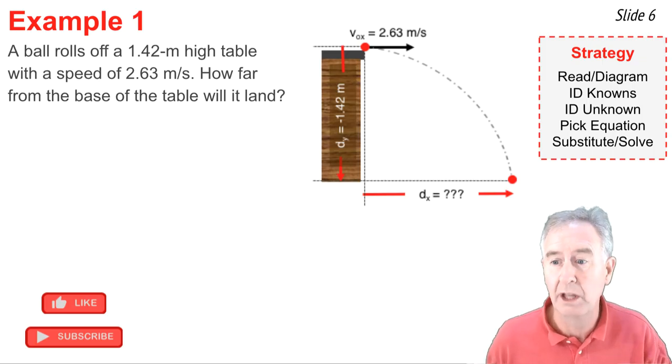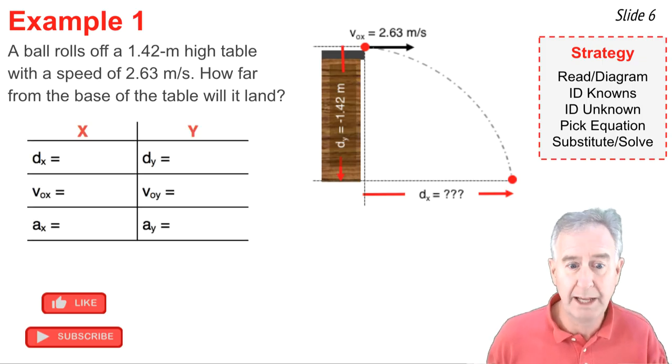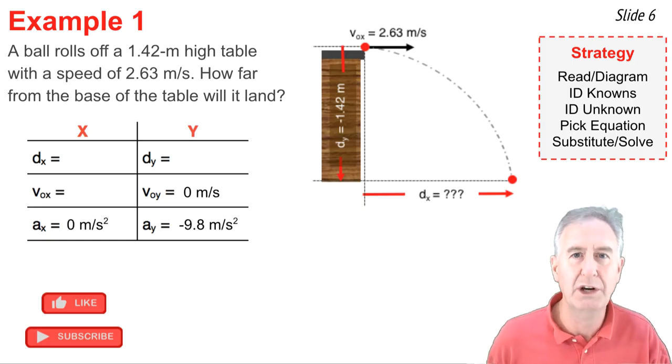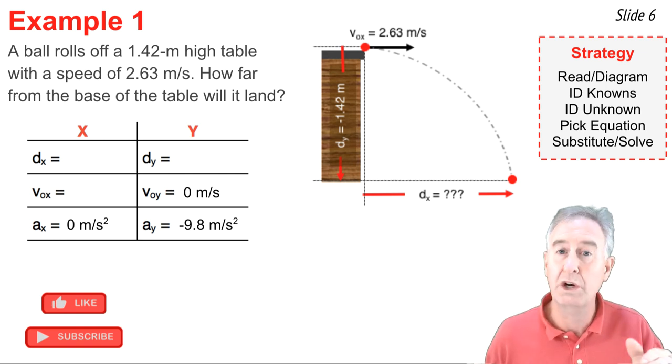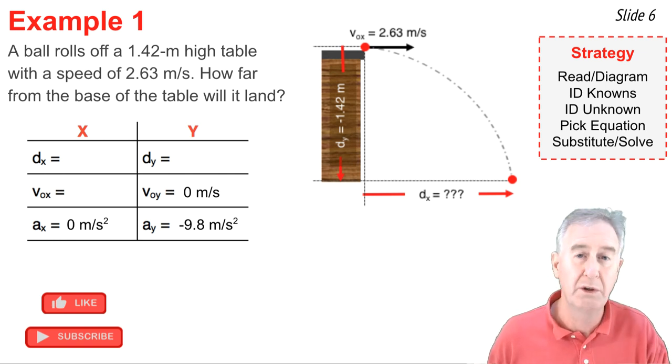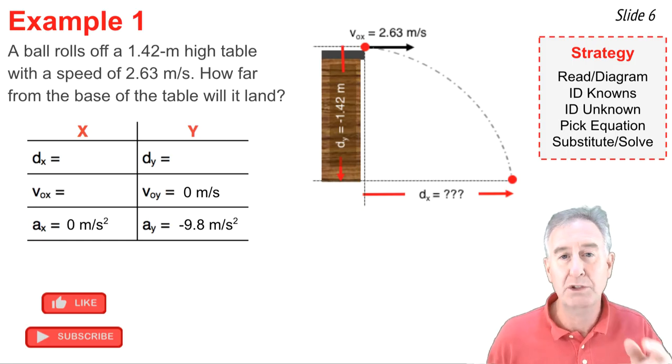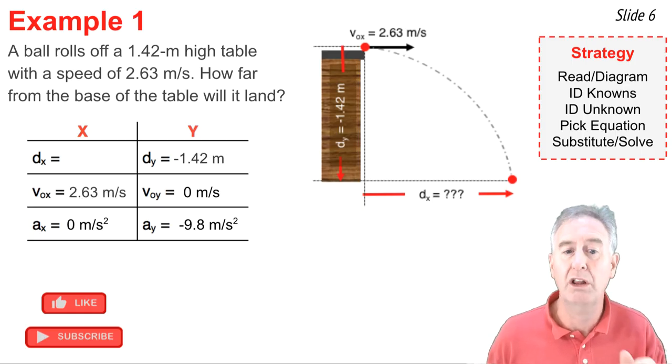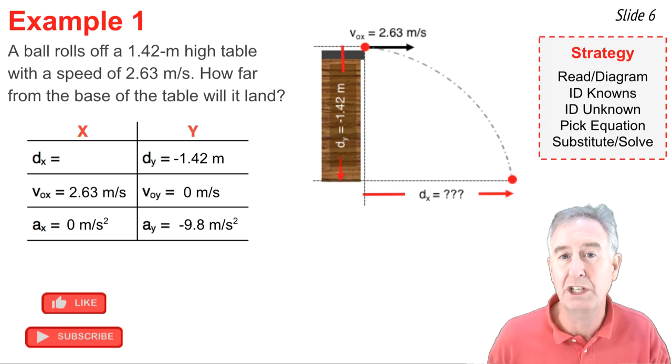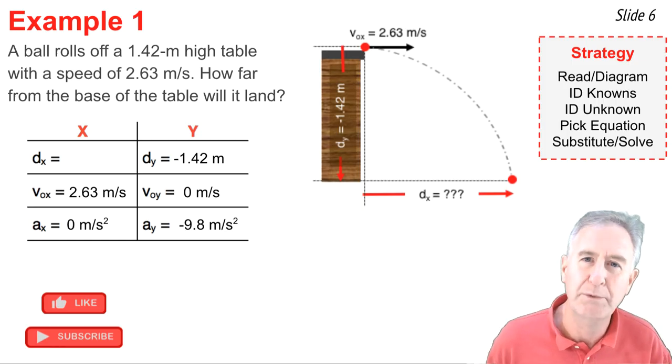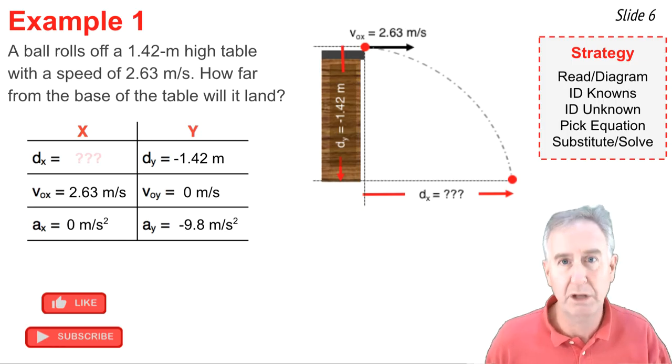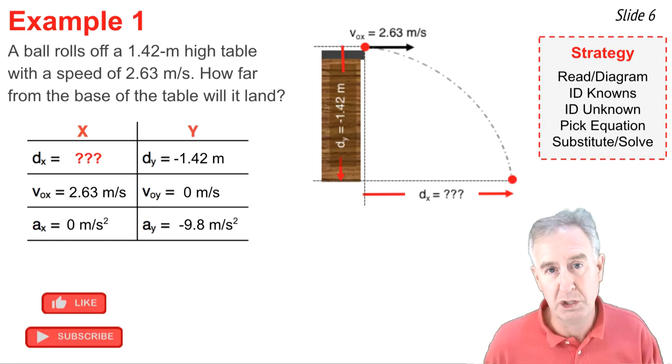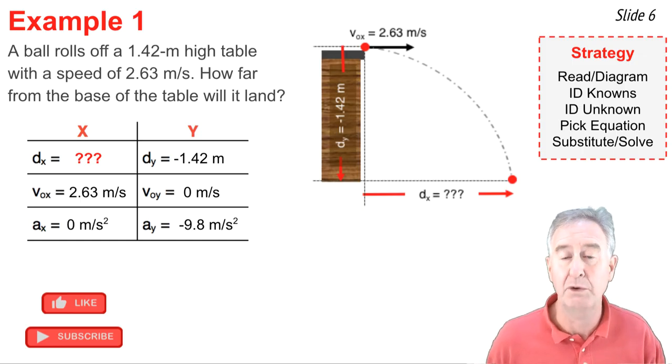My second step uses an XY table in order to ID the knowns and the unknowns. So here's my XY table. It's a projectile. So you know the bottom row. AX is 0, AY is negative 9.8. And since it's horizontally launched, there's no original Y velocity. So I know VOY is 0. There's two numbers here. There's a velocity, 2.63, and that's an original velocity X word. So I put that in the table along with the 1.42 meters for the DY. It went down. So I put a negative 1.42 meters. And what I'm looking for is DX. Now, I want to pick an equation or equations and solve for my unknown DX value.